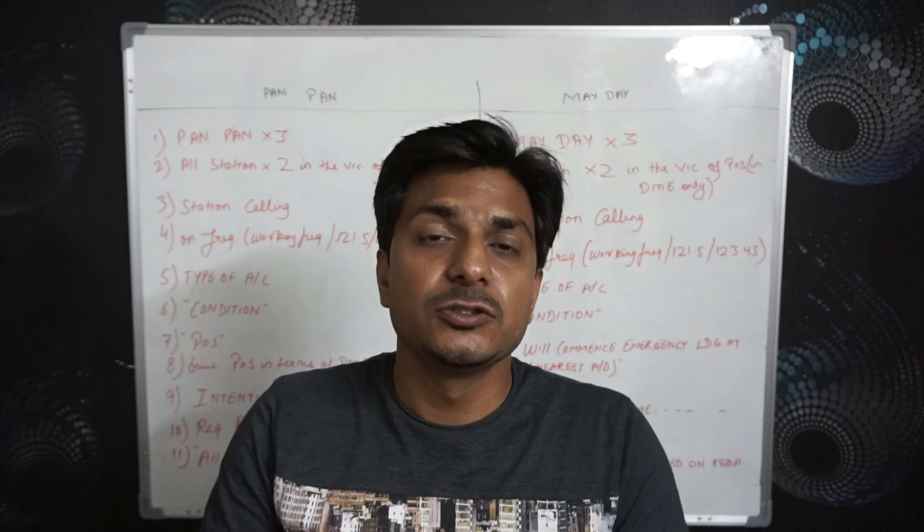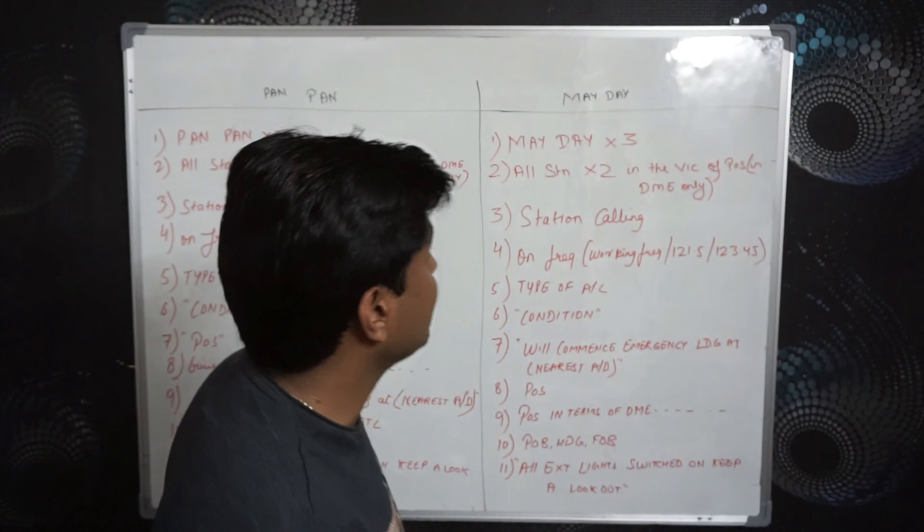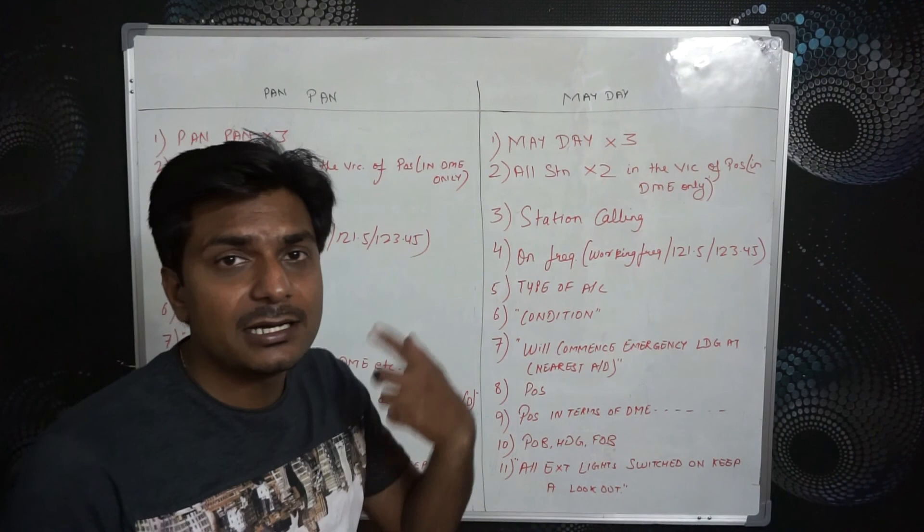I'll take the example from the last video — the second last video — on which I have already taken an urgency and distress format, and convert those examples into this format where you don't have contact with ATC. Let's find out the format I have already written on the board. Let's find out what the changes are. In the Mayday condition, first is: Mayday, Mayday, Mayday.